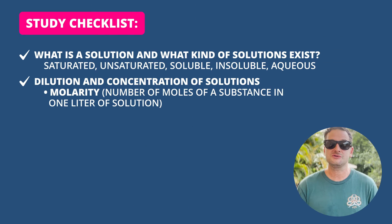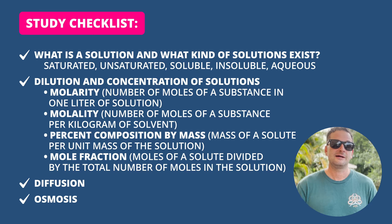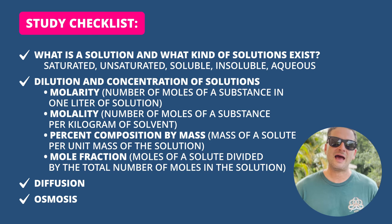For chemical solutions, you need to know what kinds of solutions exist — saturated, unsaturated, soluble, insoluble, and aqueous. You'll need to know the dilution and concentration of solutions, including molarity (the number of moles of a substance in one liter of solution), percent composition by mass, and mole fraction (moles of a solute divided by the total number of moles in the solution). You also need to understand diffusion — the tendency of molecules and ions to move toward areas of lower concentration until uniform — and osmosis, the diffusion of water from an area of high concentration to lower concentration.